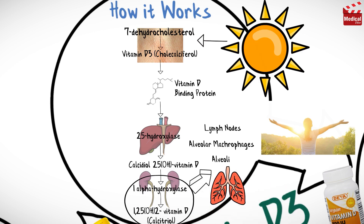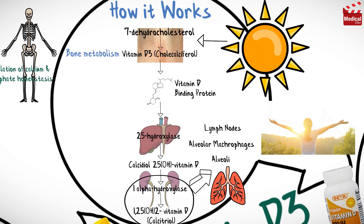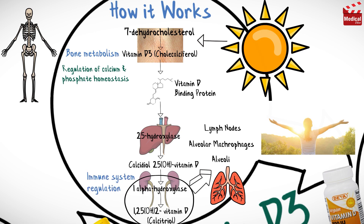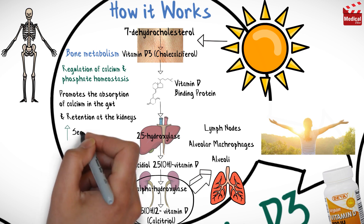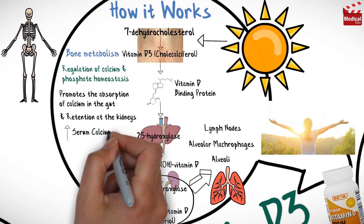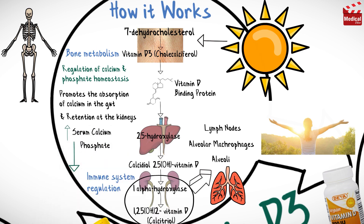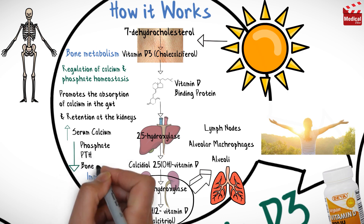Vitamin D is known to play an important role in bone metabolism through regulation of calcium and phosphate homeostasis, and may also play an important role in immune system regulation. It promotes the absorption of calcium in the gut and retention at the kidneys, which increases serum calcium levels and decreases phosphate levels, parathyroid hormone, and bone resorption.